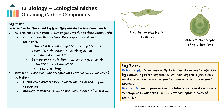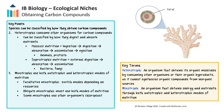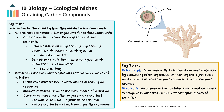Some myxotrophs don't generate their own chloroplasts. For example, corals host zooxanthellae algae in a symbiotic relationship, relying on the algae's photosynthesis for carbon compounds but also consuming plankton. Other protists steal chloroplasts from algae they consume without digesting them. This is called kleptochloroplasty — these organisms become myxotrophs by temporarily retaining functional chloroplasts from their prey.